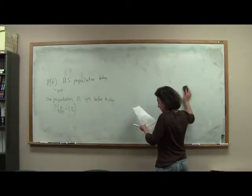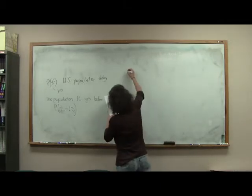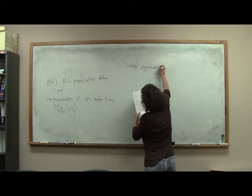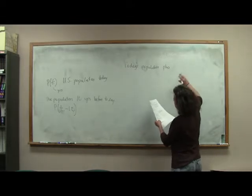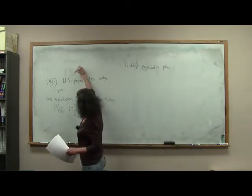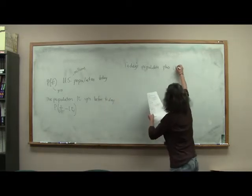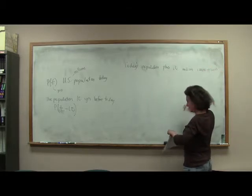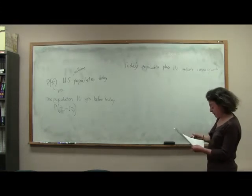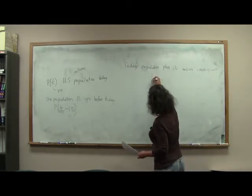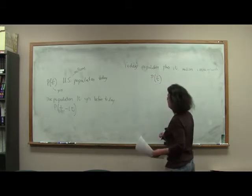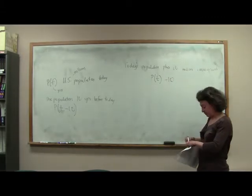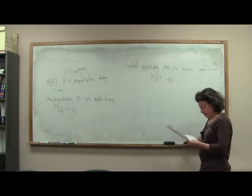What if we wanted to write the function of today's population plus, let me say that this is going to be given in millions, plus 10 million immigrants. How would we write this? Well, what we would do is we would take today's population, which is p of t. Now, notice we're not changing the time, we're changing the population. We're adding on 10 million more.